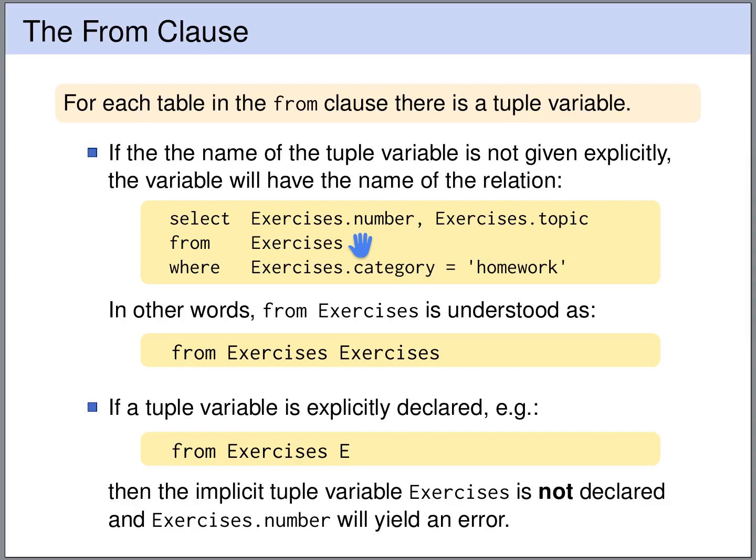Then, the tuple variable has the same name as the table. So this FROM clause is basically the same as this FROM clause, where we explicitly state that the tuple variable should have the same name as the table. The importance of the tuple variables is that we can use them to access the attributes of the table, the columns.